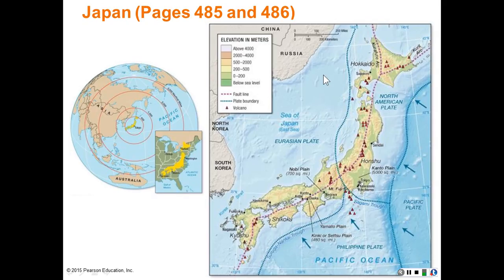The map on the right shows a geophysical map of the islands of Japan. Hokkaido, Honshu, Shikoku, and Kyushu are the main islands, although there are many other islands.